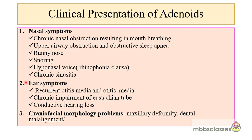There may be ear symptoms like history of recurrent otitis media and otitis media with effusion. There may be impairment of eustachian tube function resulting in conductive hearing loss. The ear symptom is a secondary effect — it can be due to the mass effect of the adenoid blocking the eustachian tube opening in the nasopharynx, or whenever there is adenoiditis, there may be retrograde spread of infection via the eustachian tube to the middle ear.